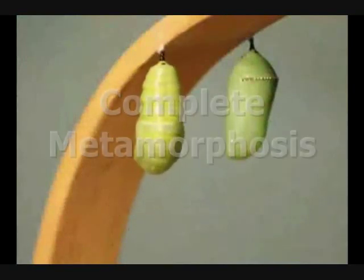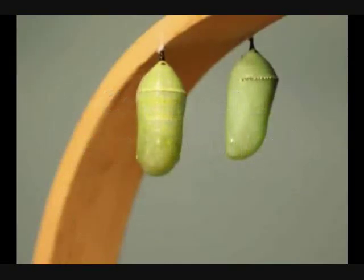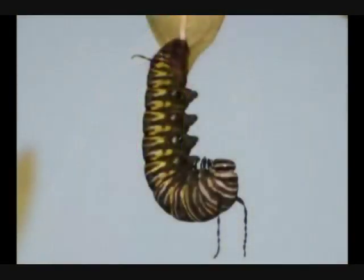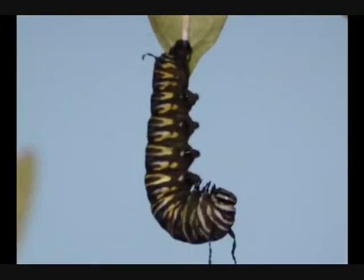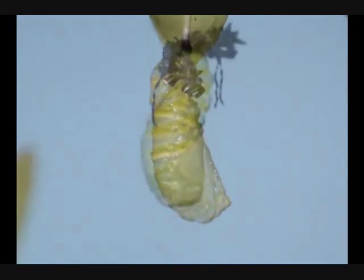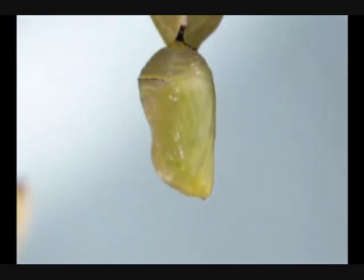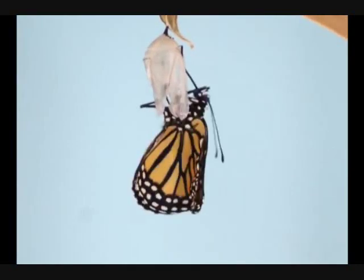Insects that have complete metamorphosis have four different life stages. These insects start as eggs, which are very small. The eggs hatch and a larva comes out. The larva looks like a worm and eats and eats so that it can grow much bigger. When the larva has grown, it changes into a pupa. The pupa usually cannot move or eat. The pupa is a special time when the insect is changing into an adult that would look very different from the larva or the pupa. The pupa are inside cocoons. When the pupa opens, the adult insect comes out.